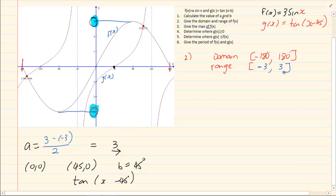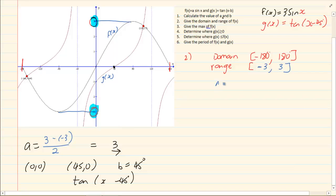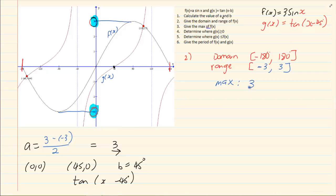Then it says give the maximum of f(x). Maximum just means one number, so it is 3. Look at your graph and write correctly — if you write maximum and it looks like your range, it is incorrect. You can't just write 3 in a bracket; you have to write it correctly.